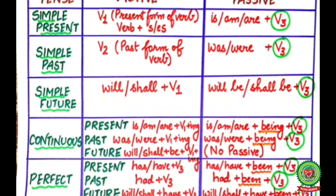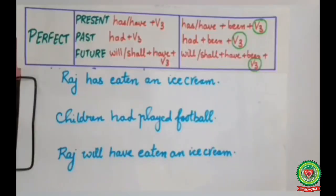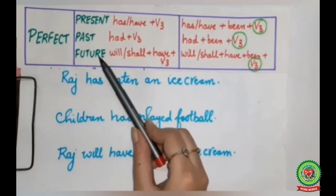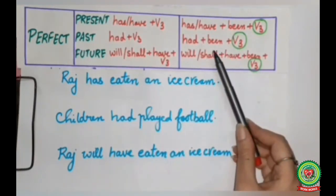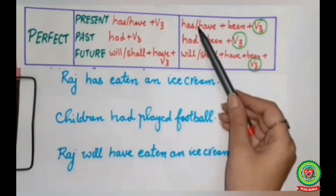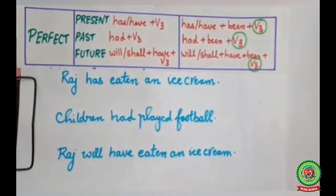There is no passive form of future continuous tense. Now we will discuss the rules of perfect tense for active and passive voice. If your active voice is given in present, past, or future perfect, then while changing it into passive voice we have to add the word been after your has, have, or had. First, we identify the subject, verb, and object.